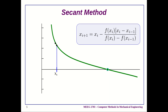Here's a short animation in PowerPoint showing the secant method at work. We start with two initial guesses x_0 and x_1, draw the secant line through those points, and find where it crosses the x-axis — that becomes our next guess. We repeat this process, drawing a new secant line between successive guesses and finding where it crosses the x-axis, converging on the root.